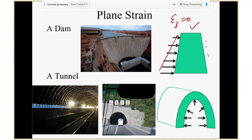When the water pressure acts on the dam, in the other direction the Poisson effect would normally cause stretching or extension, but since it's built between two rigid walls, there's no deformation in that direction. So εz = 0. That's the plane strain situation. A student asks about a curved dam — yes, for a curved wall there would be other issues and it wouldn't be pure plane strain. This example is for a straight wall.